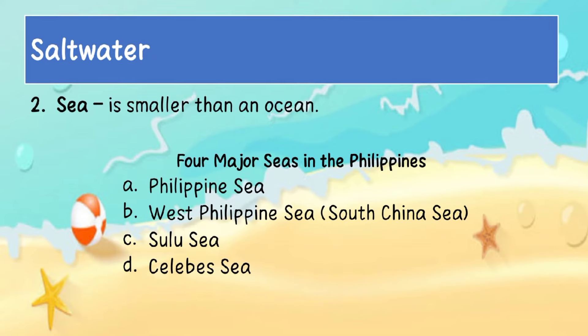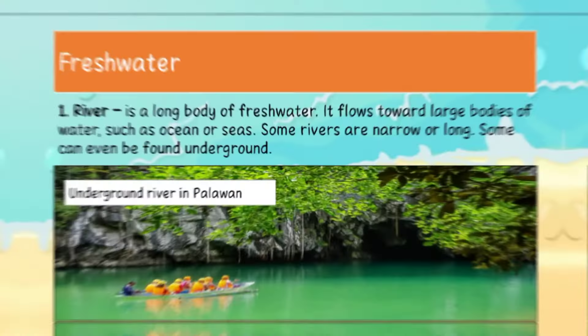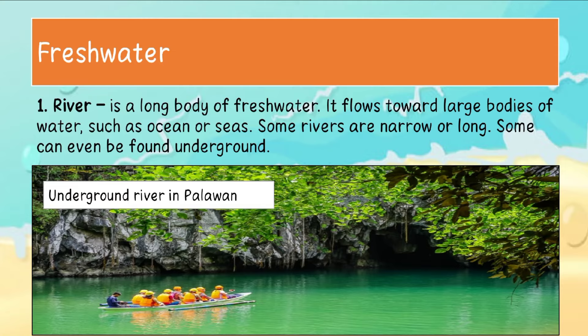A sea is smaller than an ocean. There are four major seas in the Philippines: Philippine Sea, West Philippine Sea, South China Sea, Sulo Sea, and Celebes Sea. Here is the picture of the Philippine Sea.